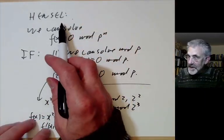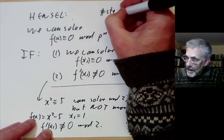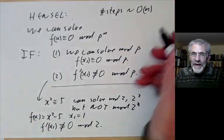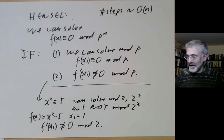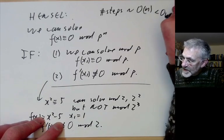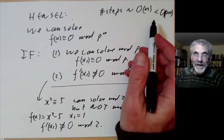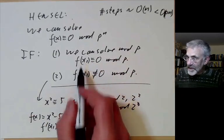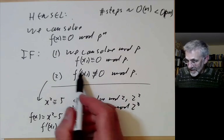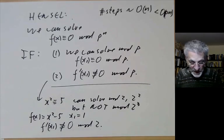Hensel's method is much faster when p is large. The number of steps is roughly O(n), compared to the previous method which took O(p·n) steps because at every step we had to test p different values. Hensel's lemma says that provided the derivative is non-zero, we don't have to test all p values — we can find the solution directly by dividing by the derivative, which is fast using Euclid's algorithm.